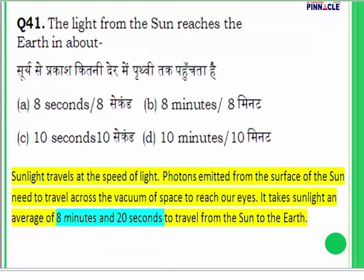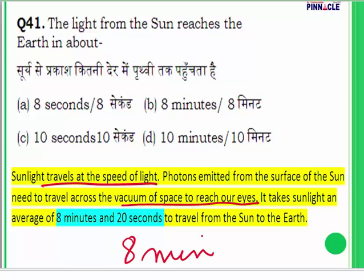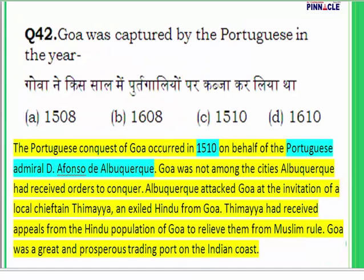Question 41: The light of the sun reaches the earth in about how much time? Sunlight travels at the speed of light. Photons emitted from the surface of the sun travel across the vacuum of space, and approximately eight minutes — to be precise, eight minutes and 20 seconds — are taken for sunlight to reach us. The answer is B — eight minutes.